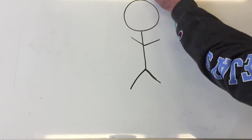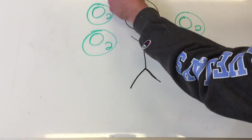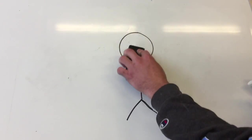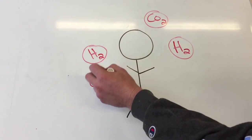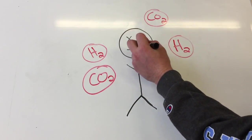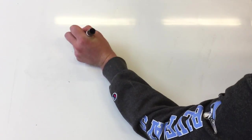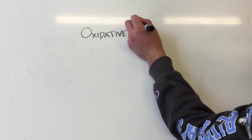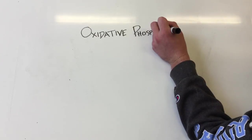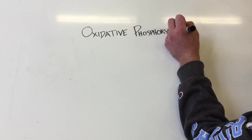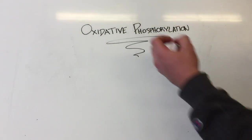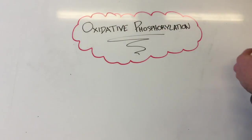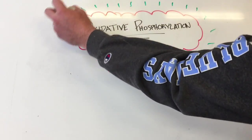Have you ever wondered why we breathe oxygen to survive? Why don't we breathe carbon dioxide or hydrogen gas? The answer lies in the process of cellular respiration. Specifically, oxygen is necessary for what is known as oxidative phosphorylation. Today we are going to explore what oxidative phosphorylation is and how it utilizes oxygen to provide energy for the cell.